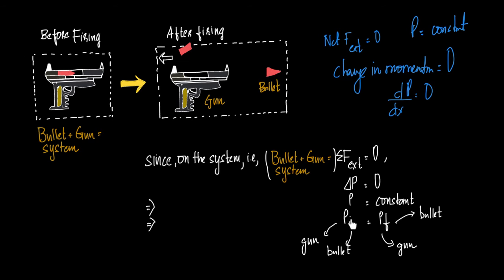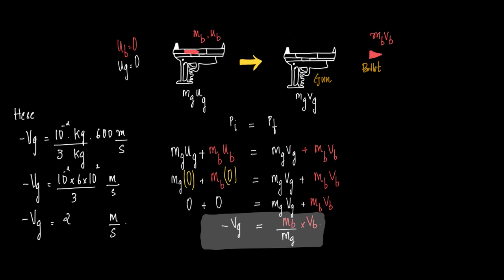The initial momentum will have components of both gun as well as the bullet. Final momentum will also have components of the gun and the bullet. So Pi = Pf. Pi will have two components: one for the gun and the other for the bullet — and the same logic applies to the final side.